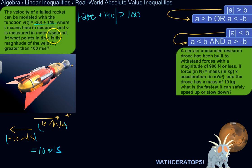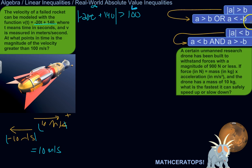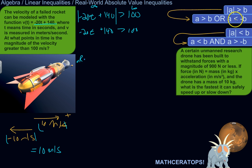So the absolute value of negative 20t plus 140 is greater than 100. That tells us at what points in time the magnitude of the velocity exceeds 100 meters per second. Using the rule that |A| > B splits into A > B or A < −B, we get: negative 20t + 140 > 100, or negative 20t + 140 < −100.